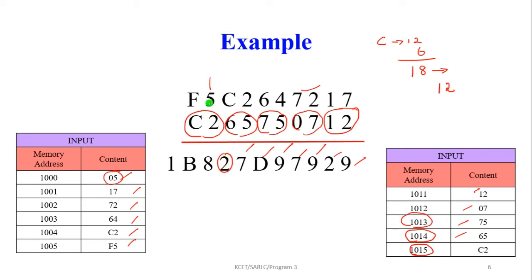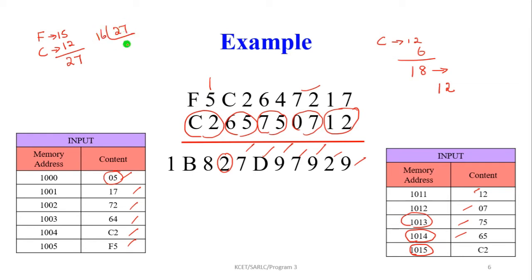Adding 1 + 5 = 6, 6 + 2 = 8. Next, F + C: F equals 15, C equals 12, giving 27. To convert 27 to hexadecimal: 27 ÷ 16 = 1 remainder 11. 11 in hex is B, so the output value becomes 1B. B is stored here and 1 is the carry. This is the answer to this problem.